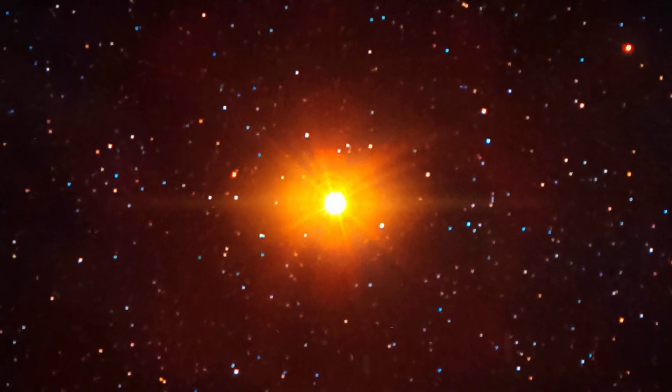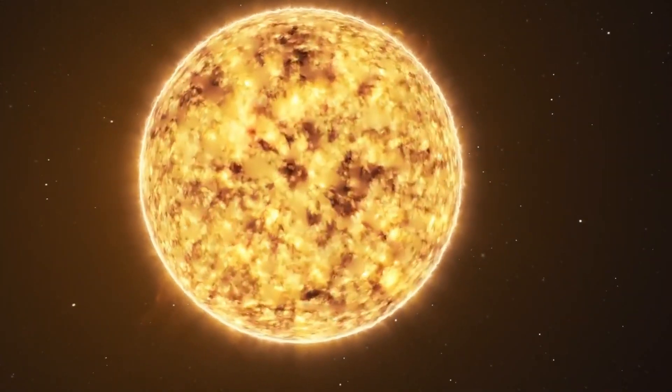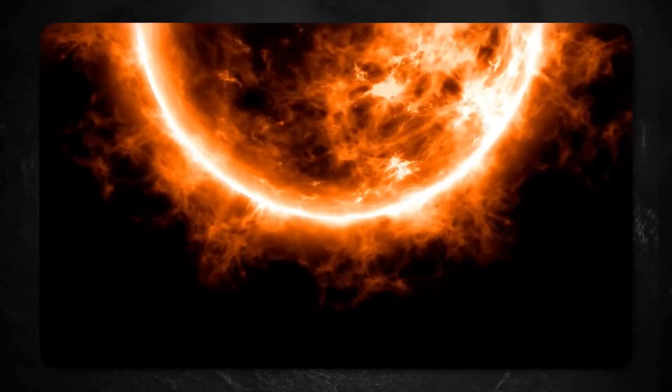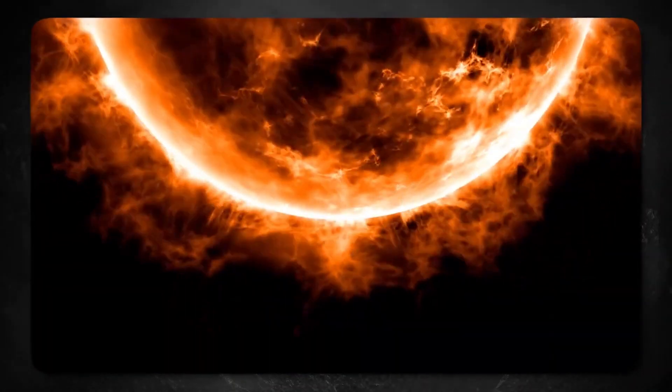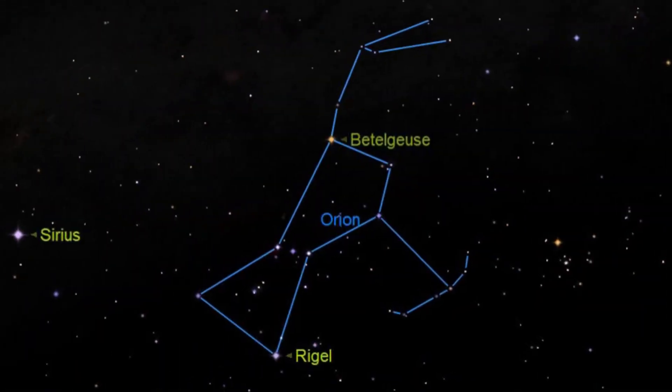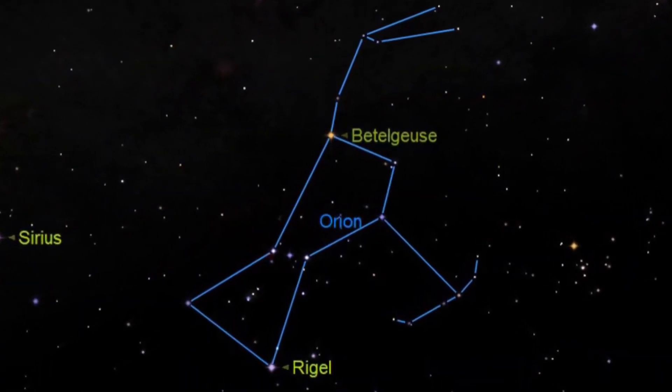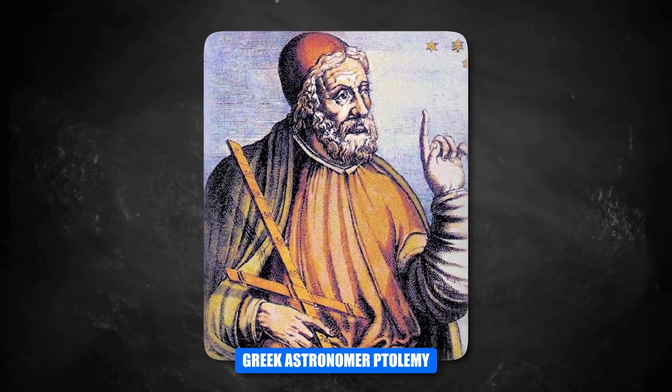A supernova close to Earth, especially from a star like Betelgeuse, makes a lot of people worry about what could happen to Earth if it happened. It's not likely that a Betelgeuse supernova will hit Earth directly, but if it does, the effects could be big and far-reaching.